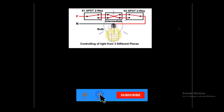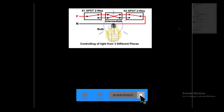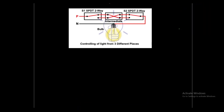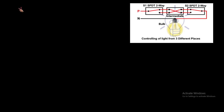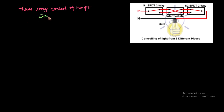Now we move to three-way control of the lamp. You are controlling from three positions. This is used for function halls, go-downs, and cinema theaters where there are multiple exits and entries. Here you observe switch one and switch two along with an extra component: the intermediate switch. The intermediate switch has two conditions.